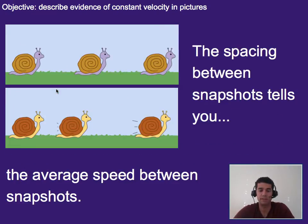Technically speaking, this is an average speed. We don't know the snail's speed in between each photo, so it could have changed a little bit, but on average its speed is staying about the same.